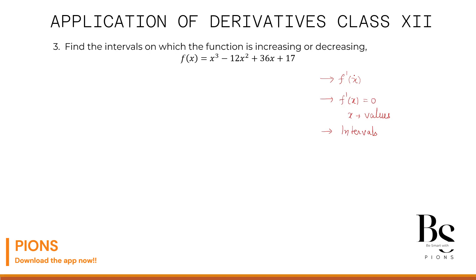Why didn't we do these steps in the previous two questions? Those were linear functions — if you differentiate, you get a constant, and putting that constant equal to 0 would be absurd. This technique is for higher degree polynomials or other functions like trigonometric functions. So let me differentiate the given function: f'(x) = 3x² - 24x + 36.